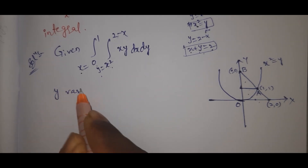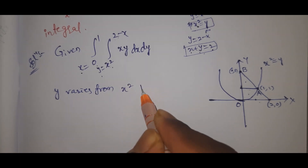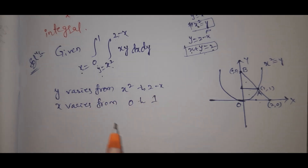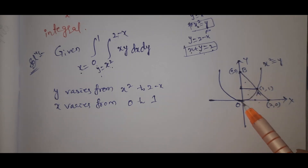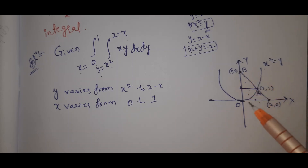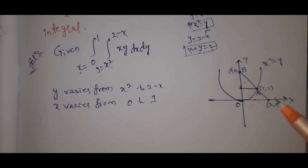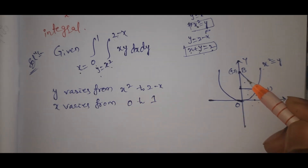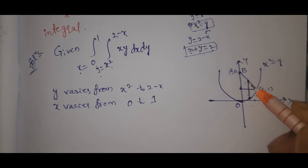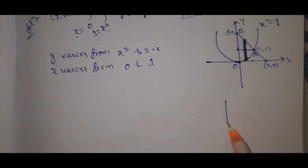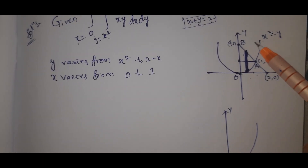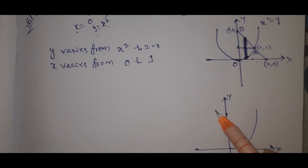In the original integral, y varies from x² to 2 minus x, and x varies from 0 to 1. The original strip is drawn on the surface of the region.